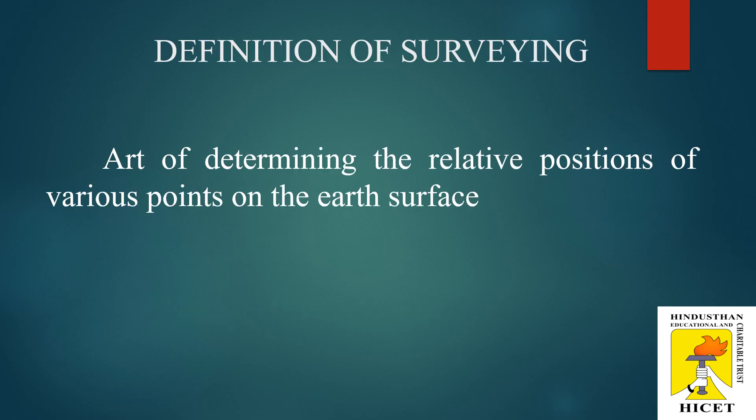First one is definition of surveying. Surveying is defined as the art of determining either linear or angular measurement, or both, to find the relative position of various points on the earth's surface. It is nothing but fixing a point on the earth's surface with the help of linear measurement. Linear means length or distance. By using length or distance measurement, we are going to fix one point, and at the same time, we also refer to angular measurement.